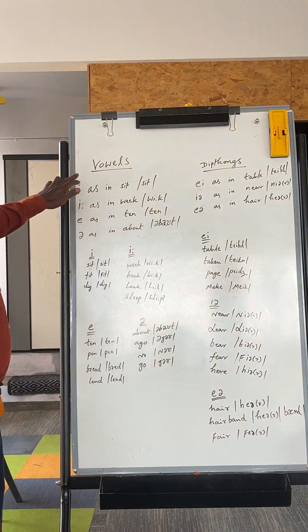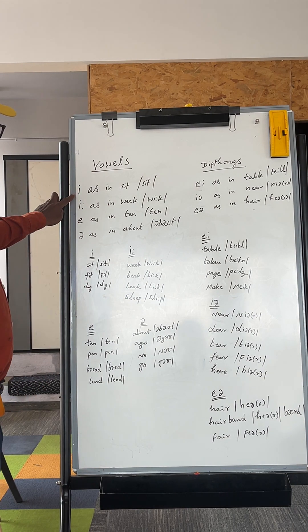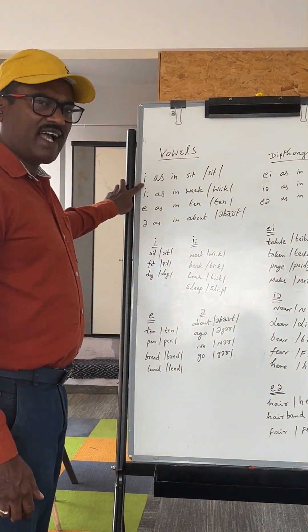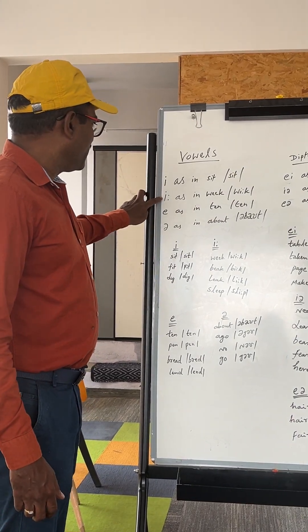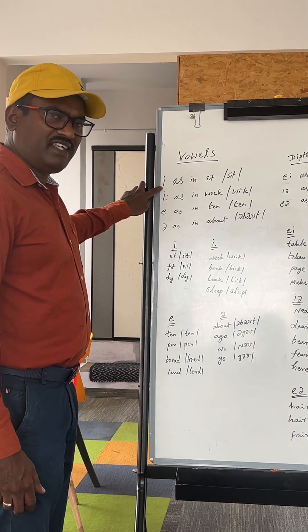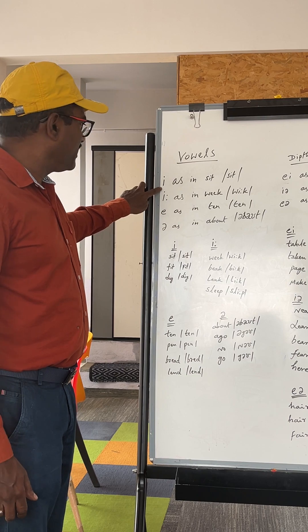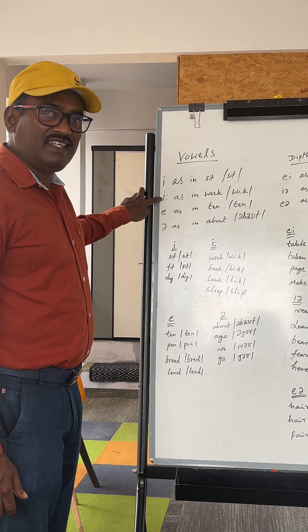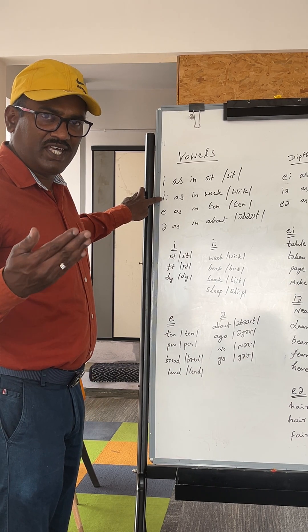First, let us practice about vowels. The short E as in sit. This is E. E as in sit. E as in week.